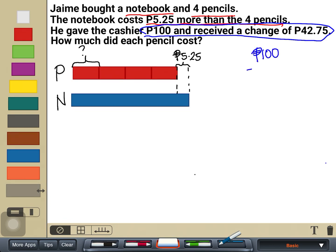That would now be 100 pesos minus 42 pesos and 75 centavos. Remember, in addition and subtraction of decimals, which I taught in the earlier videos, make sure that you are aligning the place values. So the ones should be aligned with the ones, the tens with the tens, the tenth with a tenth, and a hundredth with a hundredth.